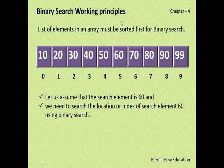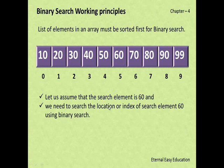Binary search working principle: the list of elements in the array must be sorted first. Here the elements are arranged from 10 to 99, with index values 0 through 9. Let us assume the search element is 60. We need to search the location or index of element 60 using binary search — we will go through the steps one by one.